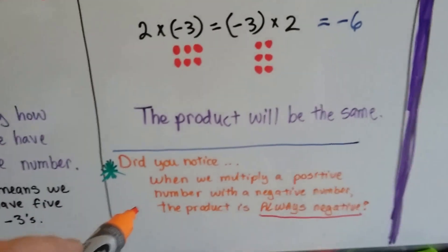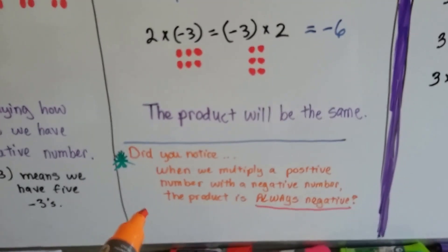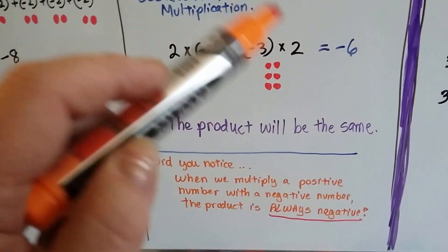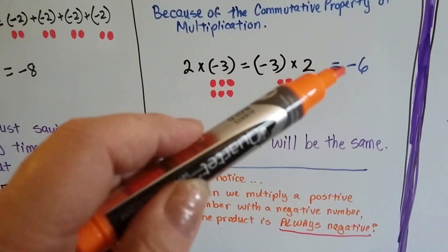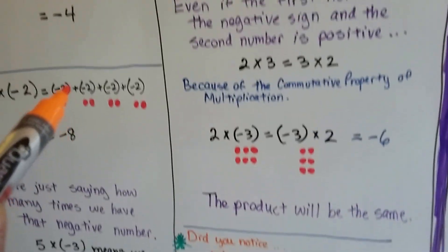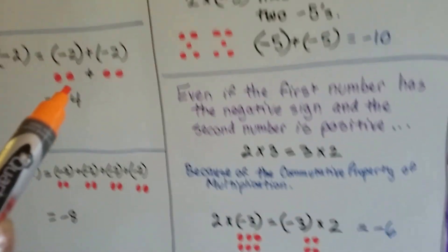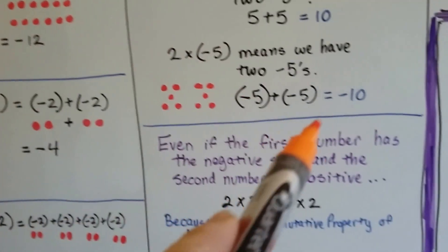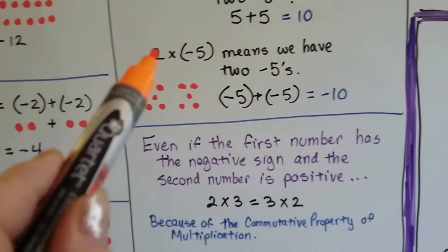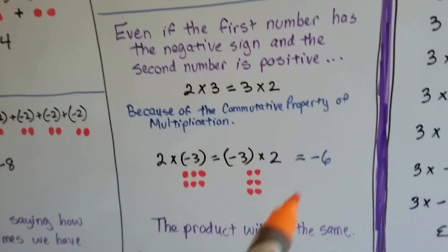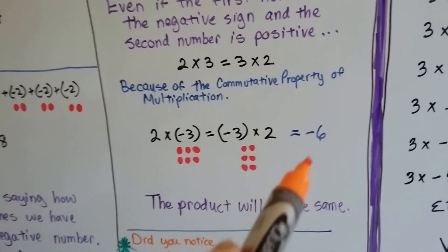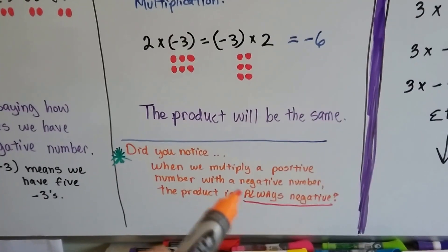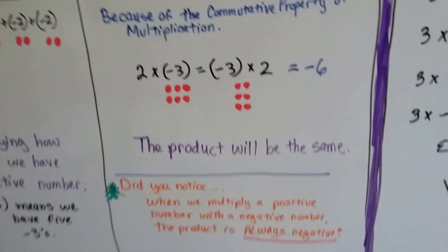Did you notice that when we multiply a positive number with a negative number, the product is always negative? Every time we multiply a positive number with a negative number, the product is always a negative number. That's a good rule to remember.